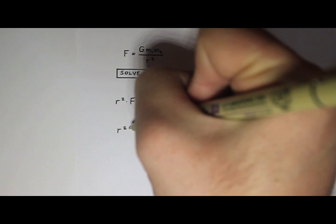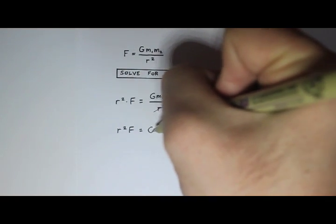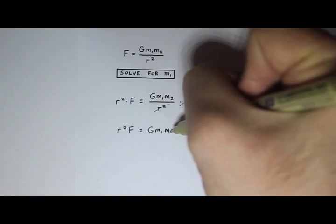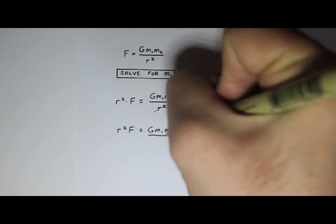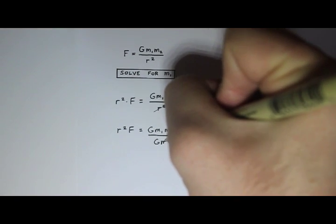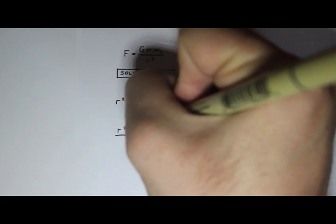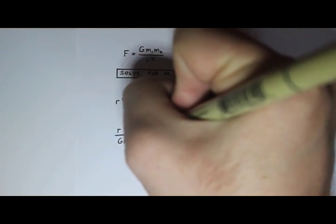So now I have r squared F equals G m1 m2. Now I could get rid of the G by dividing both sides by G and then get rid of the m2 by dividing both sides by m2, but why not get rid of both of them at once? I can just divide them both out. So divide by G m2, divide by G m2, and now the G's cancel,